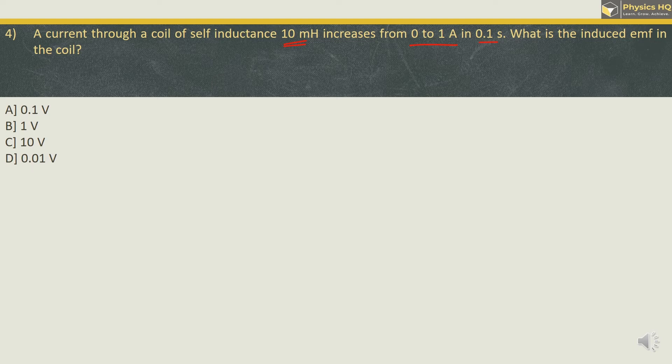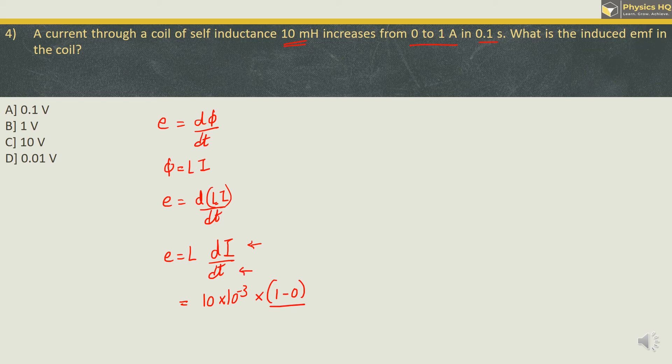So for this we will use the formula for induced EMF which is given by dΦ/dt. Now this Φ for an inductor is L into I where L is inductance and I is current. So we have E is equal to d(LI)/dt. The L over here is constant so we can have L outside and what we are left with is dI/dt. Now let us put all the values: L is given to be 10 mH, milli is 10^-3. dI over here is nothing but change in current. Change in current is final current 1 minus initial current 0. dt in the denominator is the time taken for this change and the time taken is 0.1 second.